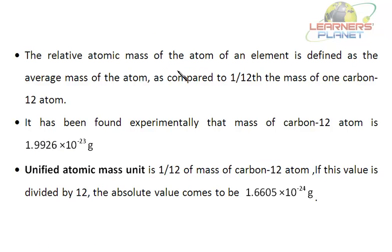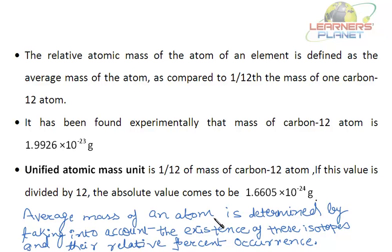The relative atomic mass of an atom of an element is defined as the average mass of the atom as compared to 1/12th the mass of one carbon-12 atom. The average mass of an atom is determined by taking into account the existence of isotopes and their relative percent occurrence. Let's take an example.